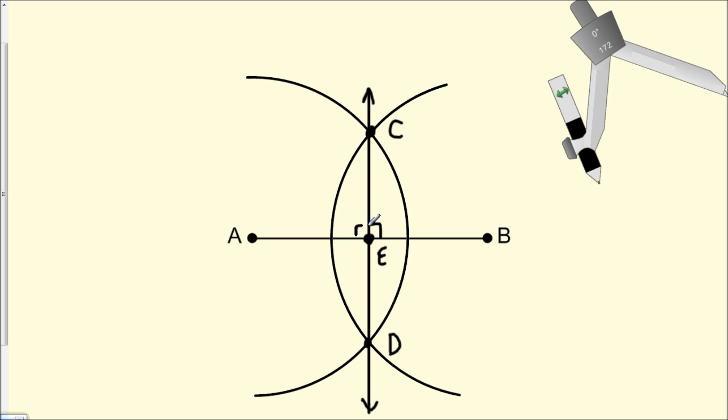Finally, since line CD is the perpendicular bisector of line segment AB, we can say that line segment AE is congruent to line segment EB.